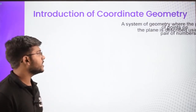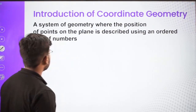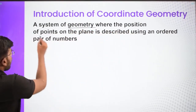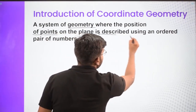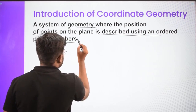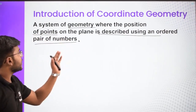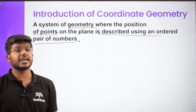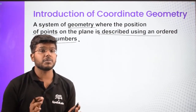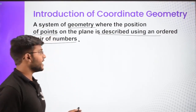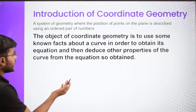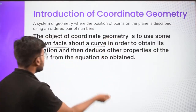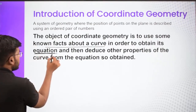Let's start with the introduction of coordinates and discuss some very basic points. What is coordinate geometry? It is a system of geometry where the position of points is described using an ordered pair of numbers. In coordinate geometry, if you want to specify the location of any point, we use the ordered pair of numbers, that is x comma y, which you have already seen. The objective of coordinate geometry is to use some known facts about a curve in order to obtain its equation.